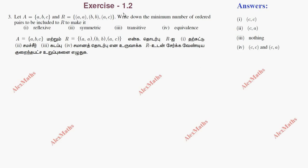Hi students, exercise 1.2, question number 3. Let A equal to {A, B, C} and R equal to {(A,A), (B,B), (A,C)}. Write down the minimum number of ordered pairs to be included to make it reflexive.